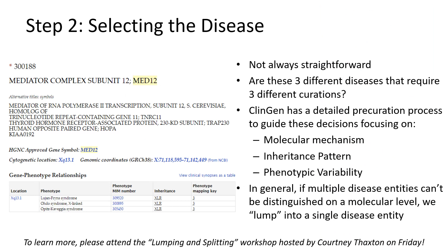Once the genes are selected, the GCEP must carefully determine which disease they will be evaluating. This process is not always straightforward, as many genes have been associated with multiple conditions, and sometimes it's unclear whether or not these conditions are truly distinct clinical entities. ClinGen has a pre-curation process in place to help GCEPs walk through these decisions. For each gene-disease pair, we evaluate the molecular mechanism, the inheritance pattern, and the phenotypic variability. In general, if the disease entities are not distinguishable on a molecular level — for example, loss of function variants cause one disease and gain of function variants cause a completely different disease, or autosomal dominant is one disease and autosomal recessive is a different disease — then the disease entities will be lumped into a single overarching disease entity for curation purposes.